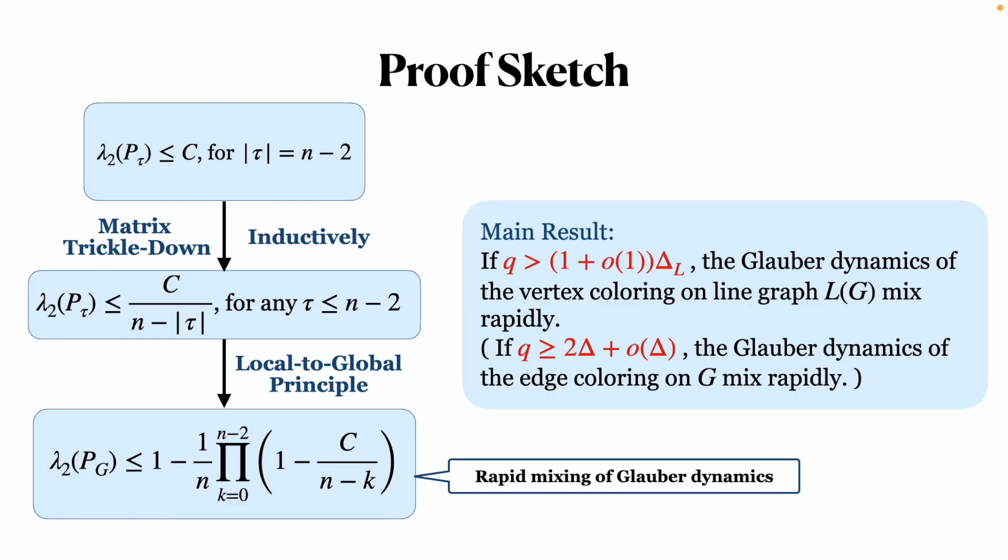So, our main result is that the Glauber dynamics of vertex coloring on the line graph mix rapidly when q > (1 + o(1))Δ_L. That is to say, for the original edge coloring problem, the Glauber dynamics mix rapidly if q is greater than (2 + o(1))Δ.